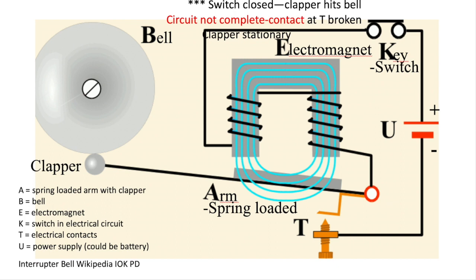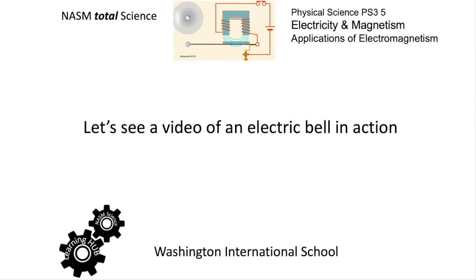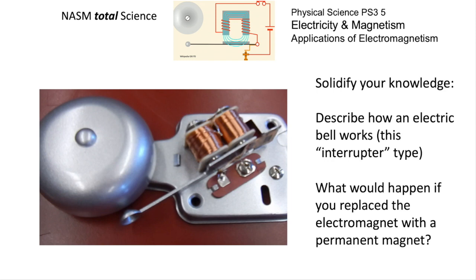And so the circuit actually breaks and you won't have an electromagnet, so you'll go back to the first diagram. We're going to just look at a video of the electric bell process.